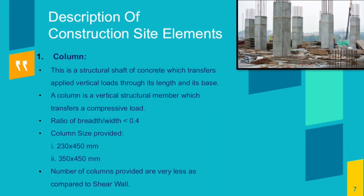Description of construction site elements. First, column: this is a structural shaft of concrete which transfers applied vertical loads through its length to its base. A column is a vertical structural member which transfers a compressive load. The number of columns provided are very less as compared to shear wall.